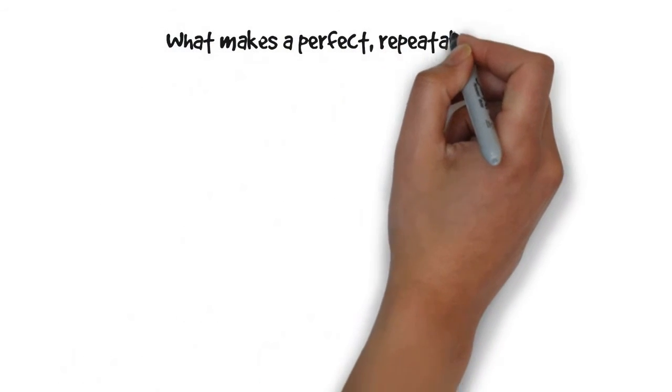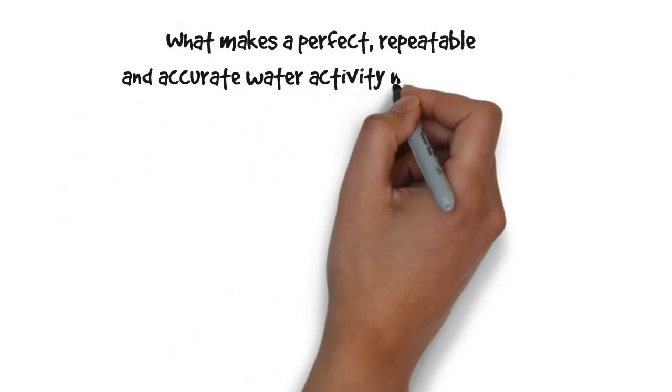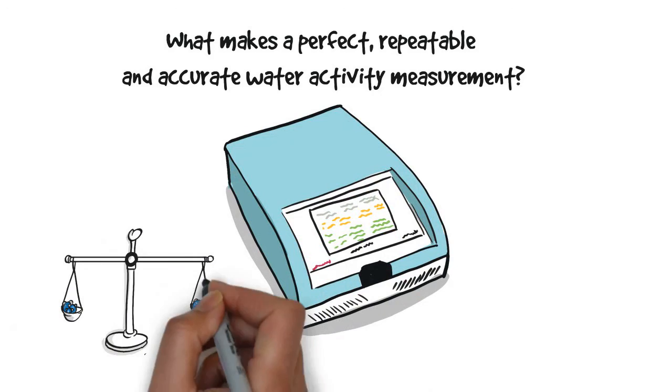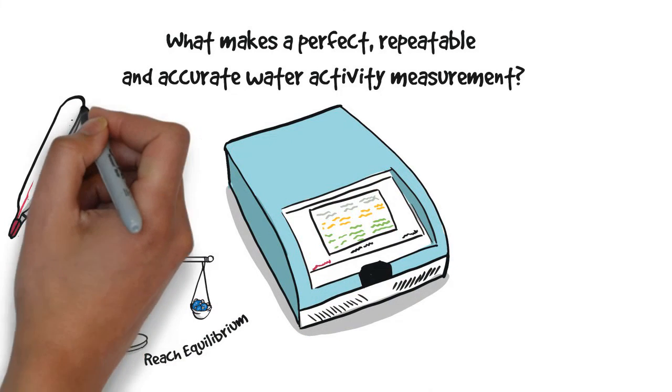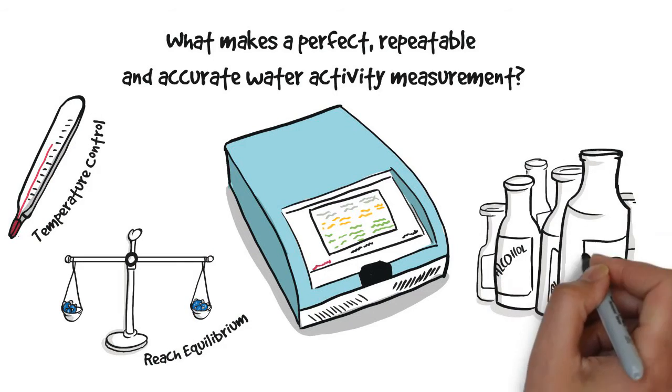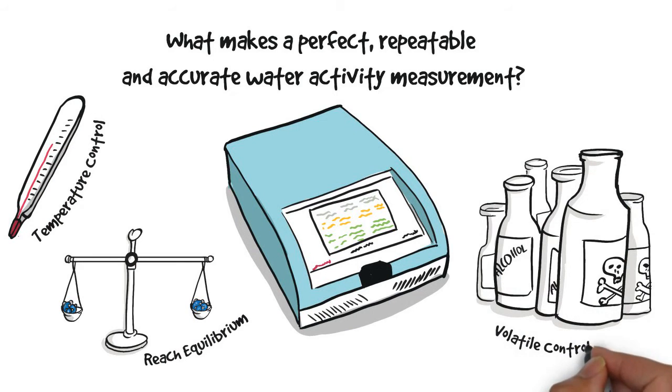What makes a repeatable and accurate water activity measurement? In measuring water activity, wait until the sample has reached stability. Measure at a consistent temperature so that you can compare values. Neutralize the influence of volatiles which can skew your results.